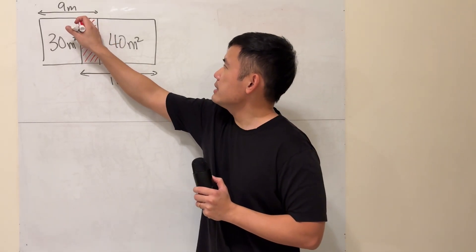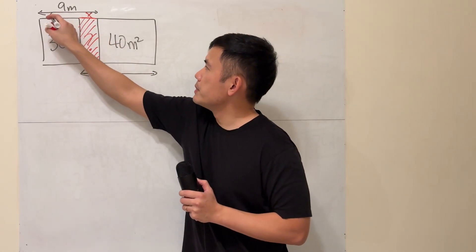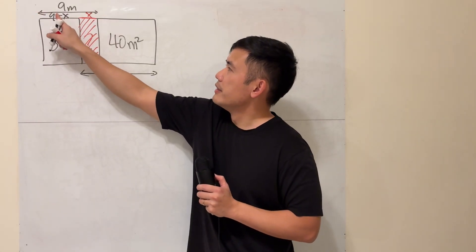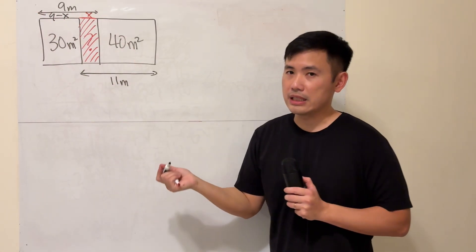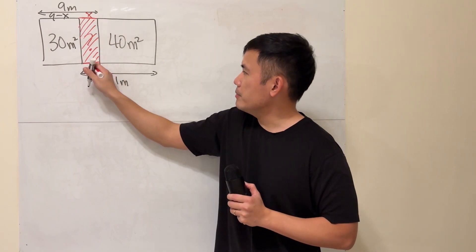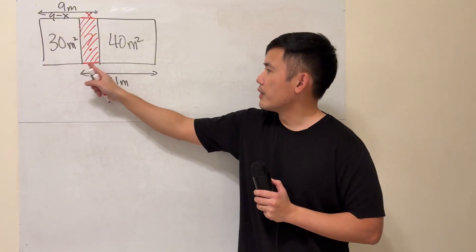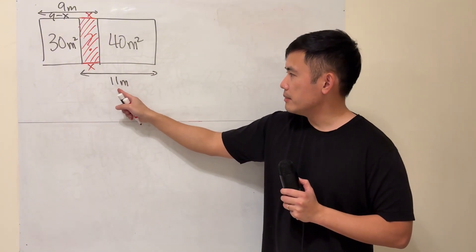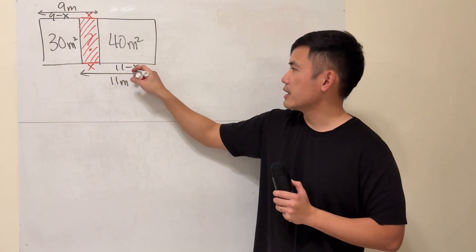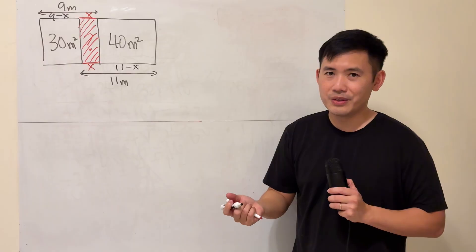Let's call this part x. So this right here will be 9 minus x, because the whole thing is 9 and this little bit is x. Similarly, because this and that will be the same (it's a rectangle), that will be x as well. From here to here, the whole thing is 11 meters. That's x already, so this part will be 11 minus x. Good, but now what? Well, we are going